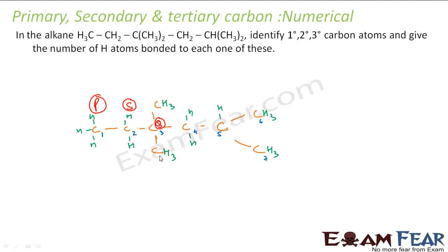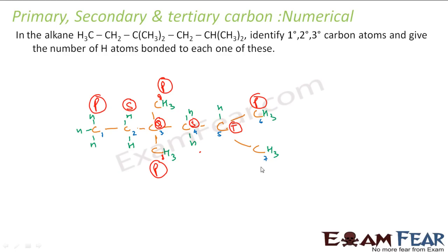I didn't number it yet, but this branch carbon is carbon 8. Carbon 8 has only one carbon attached, so it is primary. Carbon 9 also has only one carbon attached — that is C3 — so it is also primary. Carbon 4 has two carbons attached — secondary carbon. Carbon 5 has three carbons attached — tertiary carbon. Carbons 6 and 7 each have only one carbon attached — both are primary carbons.